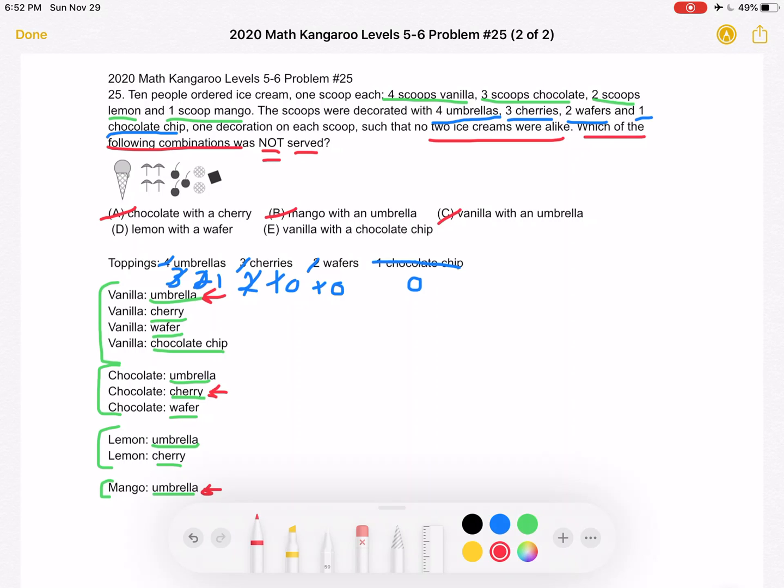D, lemon with a wafer. Well, if we look at lemon, we have umbrella and cherry. We don't have a wafer, so it looks like D is going to be our answer.